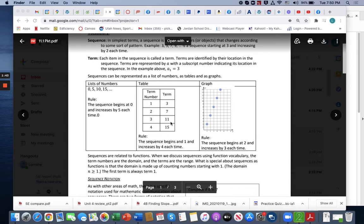Over here is another one where we show a table can also be represented as a sequence. The sequence begins at 1. Actually, these are the terms right here: 1, 2, 3, and 4. The first term is 3, second term is 7, third term is 11, and the fourth term is 15. So this sequence begins at 3 and increases by 4 each time.